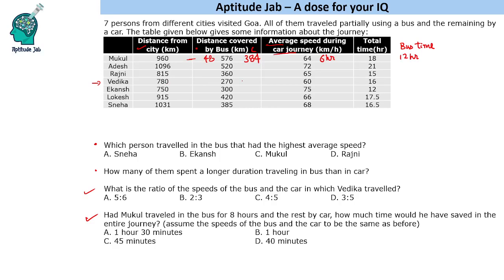For Vedika: total distance is 780, distance by bus is 270, so distance by car is 510. Speed of car is 60, so time by car is 8.5 hours. Total time is 16 hours, so bus time is 7.5 hours. Speed of bus = 270 divided by 7.5 = 36 km/h. The ratio of bus speed to car speed is 36 to 60, which simplifies to 3:5.